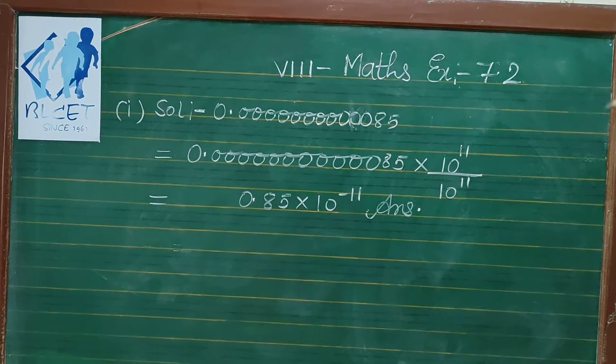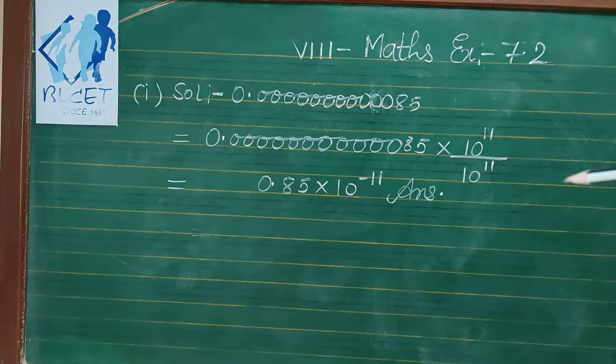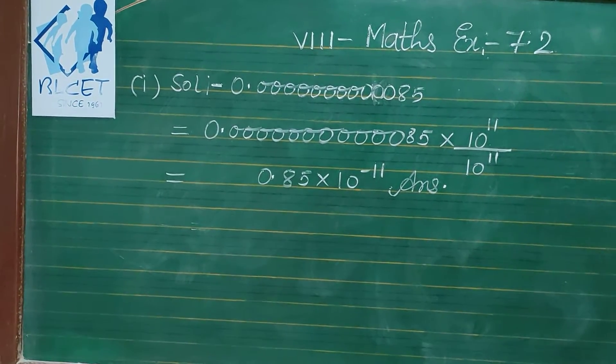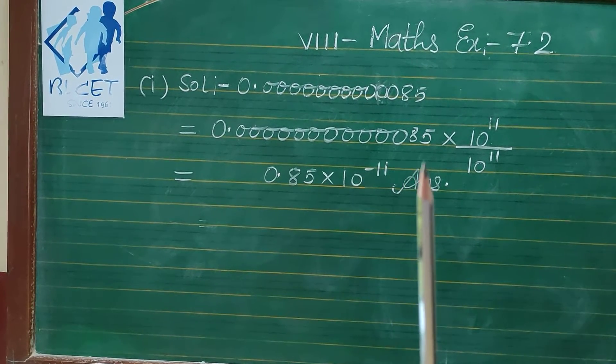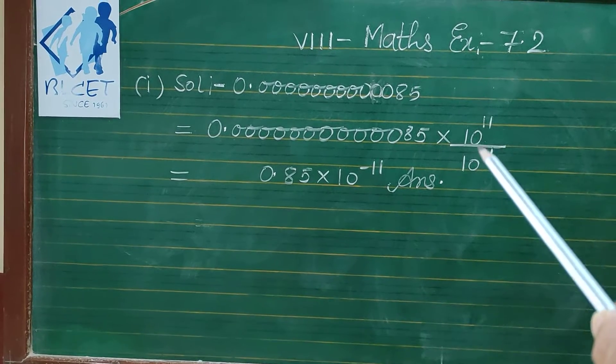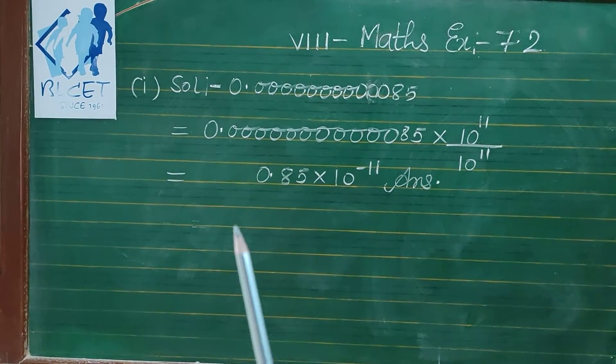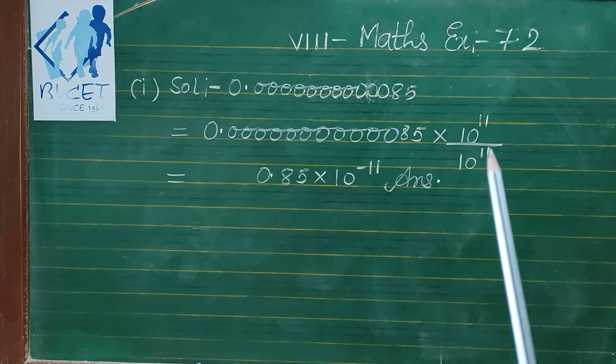So we will multiply and divide 10 to the power of 11 in the numerator and denominator. Now we want to send the decimal to right hand side, so numerator's exponent form we will use. Decimal moves here and 10 to the power minus 11.